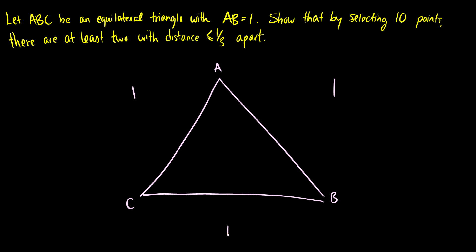Okay, and I want to show that by selecting 10 points, there's at least two with distance less than or equal to a third apart. Okay, so I'm targeting this number here, this less than or equal to one third. So what I want to do is I want to split up these sides into distances of one third.